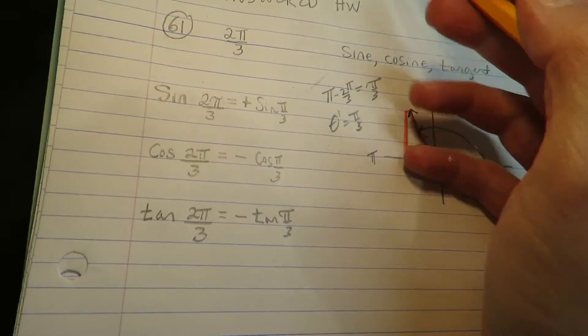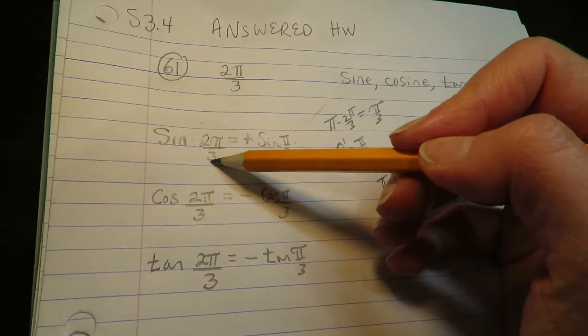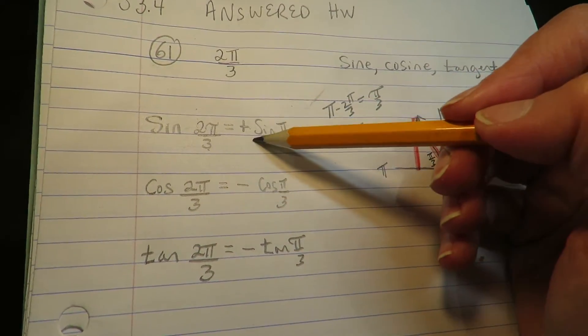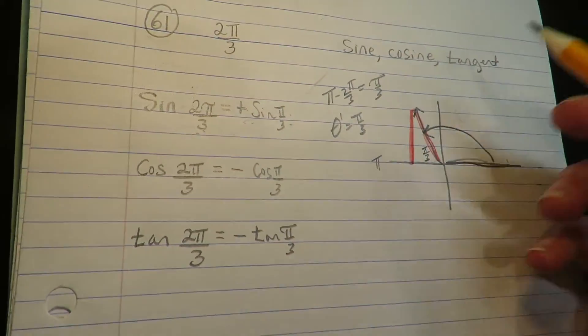Alright, so what I just said earlier: the reference angle with the correct plus or minus is equivalent to the original statement. So these two things are equivalent to the original statement. So now I'm going to use a triangle.